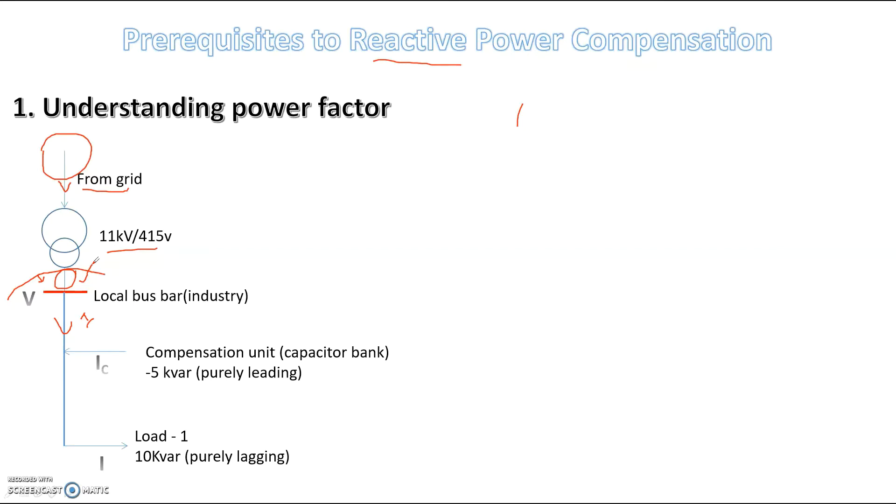You have to understand that cos phi plays a very important role here. Now, if I have some load, load one, that is purely lagging load. Purely lagging means it is an inductive load. If it is an inductive load, what will happen is it will be drawing 10 kVAR from the grid.